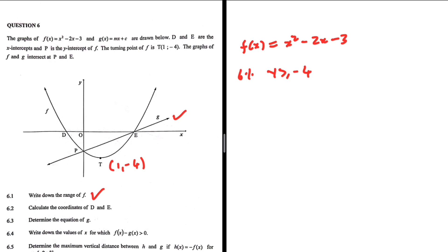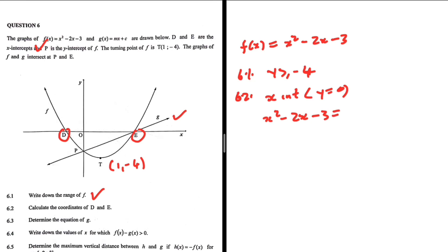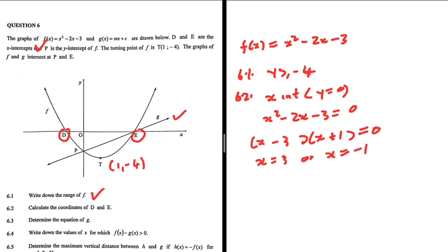y cannot be less than -4, as you can clearly see from the sketch. For 6.2, calculate the coordinates of D and E. Those coordinates are the x-intercepts of f, so we let y = 0. We get x² - 2x - 3 = 0, which factors as (x - 3)(x + 1) = 0, giving x = 3 or x = -1.